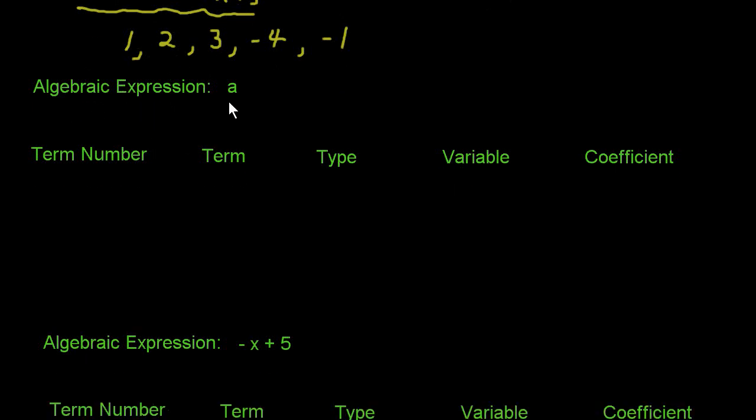So now, let's categorize some of these. Here's the algebraic expression A, and there's only a single term in here. One term, and what is that term? It's just A.